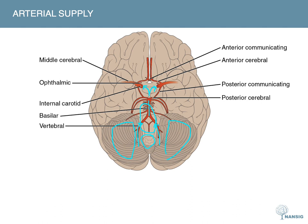Moving upwards, what's very important — especially for medical school exams — is identifying the circle formed by arteries surrounding this central area, which is called the Circle of Willis. The fact that it's a circle isn't by accident; there are evolutionary benefits to it. If there's any compromise to the arterial architecture, there's collateral supply due to its structure, which can help supply blood to a region in need.